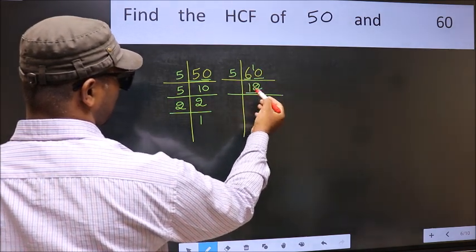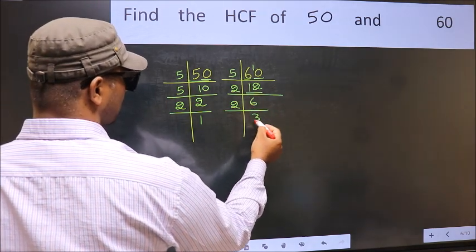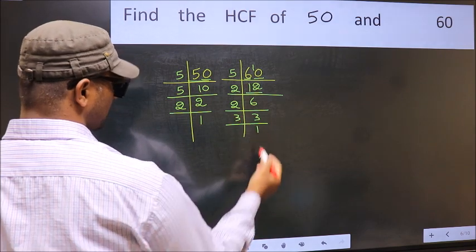Now 12 is 2×6 is 12. 6 is 2×3 is 6. 3 is a prime number, so 3×1 is 3.